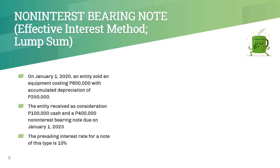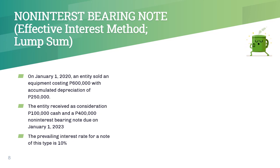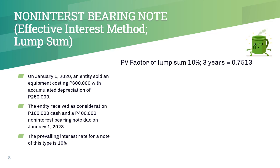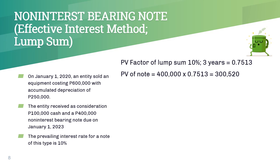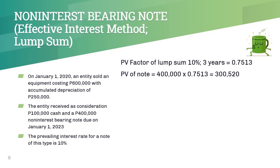Let's have another example. This time, we have a note with a face value of 400,000 pesos, payable in a single sum at the end of 3 years. The prevailing interest rate for a note of this type is 10%. In this example, we will be using the lump sum formula in computing for the present value. The PV factor of 1 for 3 periods at 10% is 0.7513. The present value of the note is computed as 400,000 × 0.7513, which gives us 300,520 pesos. The difference between the face value of 400,000 and the present value of 300,520 pesos is unearned interest income, to be recognized as interest income over the term of the note.